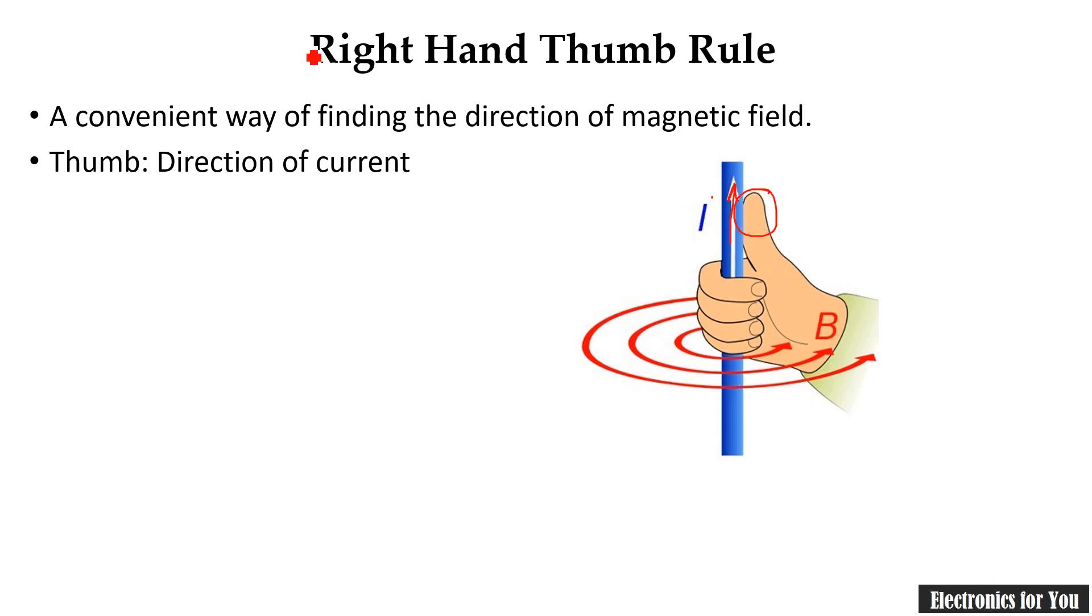This is the direction of current and to this direction, if you are using right hand, keep your thumb of right hand in the direction of current, then your curly finger will indicate the direction of magnetic field. That is the simplest rule which will indicate the direction of magnetic field around the conductor that we were talking about.